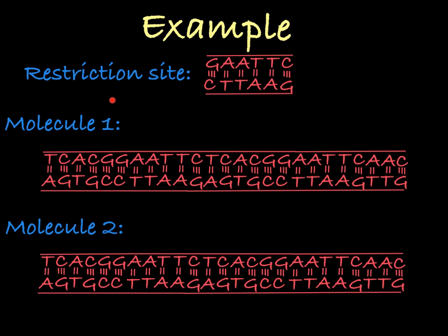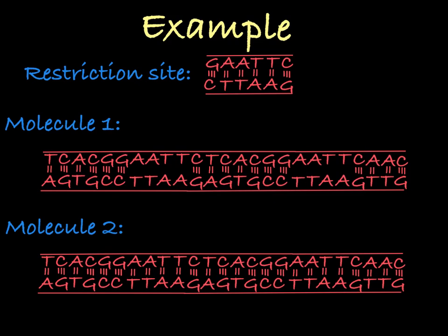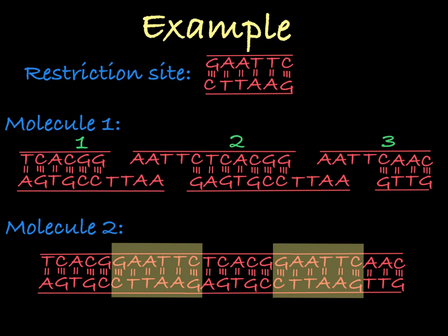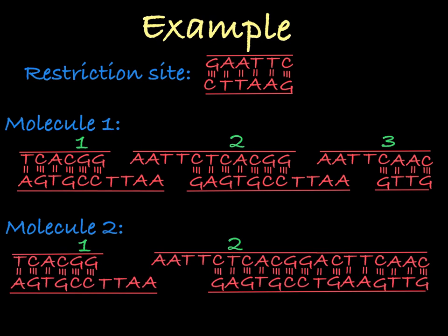We can see here that this molecule has two restriction sites. It will get cleaved at these sites by the restriction enzyme, and now we have three separate molecules of DNA. This second molecule of DNA has had a substitution mutation in the second restriction site, meaning the restriction enzyme would not cleave there. Instead, it would only cleave at the first site, creating two separate fragments of DNA.